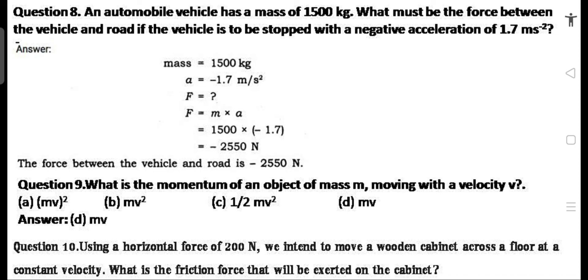Question 9: What is the momentum of an object of mass M moving with a velocity V? Answer: D — M × V. Because the formula for momentum is p = M × V.